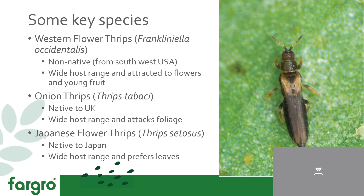The next species is the Onion Thrips, which is native to the UK. It can be seen in very high populations, especially outdoors with field vegetables or hardy nursery stock. It also has a very wide host range, but the Onion Thrips prefers foliage or leaves rather than flowers.